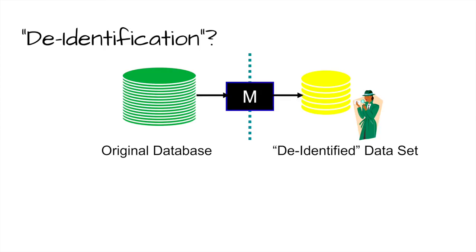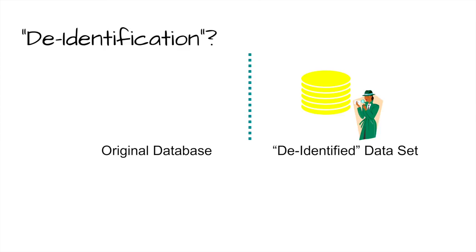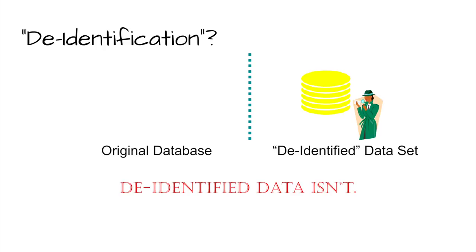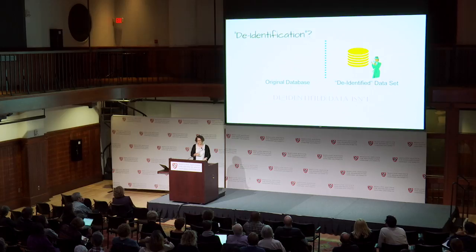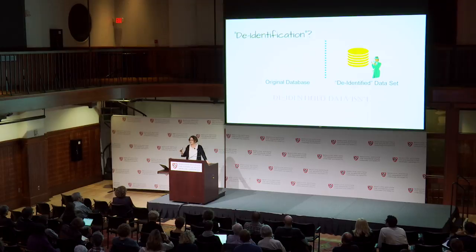Many people think about de-identifying data. The dream is: an algorithm chomps on the database, stripping out certain things and averaging and aggregating others, and produces a de-identified data set. The analyst can then examine it freely without the original. The problem is that a number of studies have shown that de-identified data isn't — either it isn't truly de-identified, or it is no longer data.